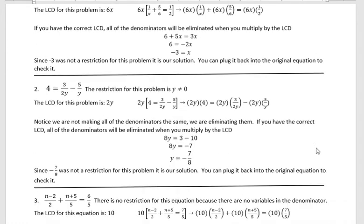For the second one, the restriction is again y cannot be 0, because if I made y 0, this would become undefined and so would this. We can never have 0 in the denominator. The LCD for this problem is 2y. You have a y here and you have 2y there, and this has a 1 under it. That's not going to change our LCD.